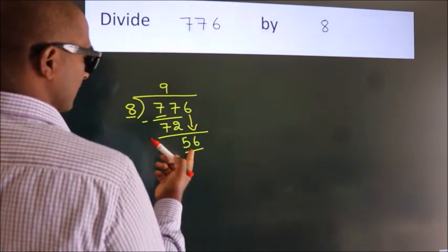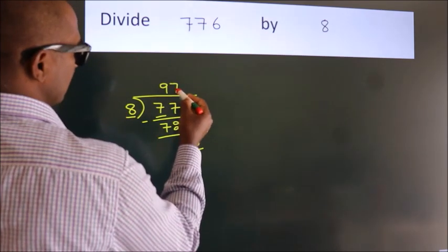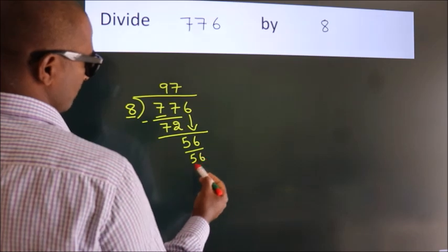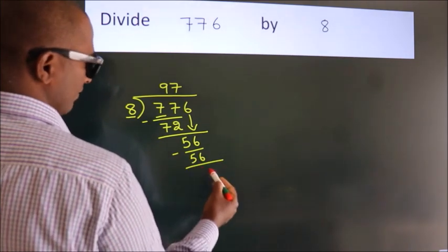When do we get 56? In 8 table. 8 7s, 56. Now, we subtract. We get 0.